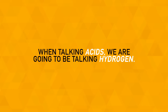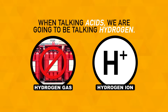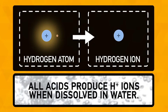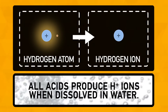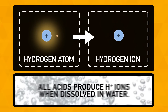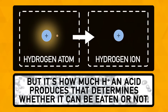When talking acids, we're going to be talking hydrogen — not the gas, but rather the hydrogen ion H+. This is a hydrogen atom that has lost its one and only electron. All acids produce H+ ions when dissolved in water, but it's how much H+ a specific acid can produce in water that will determine whether it can be safely eaten or not.